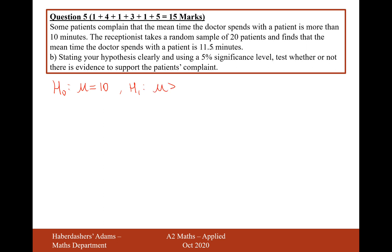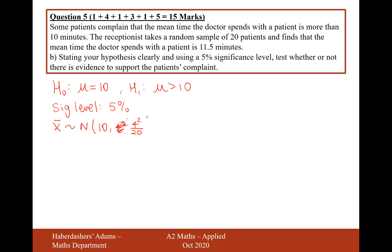We're not saying that the mean is now 11.5; we're saying that the mean is just bigger than 10. The significance level is 5%. We have an X distribution which is normally distributed with a mean of 10 — we're going to assume it's still 10 — with a standard deviation of 4. Now the standard deviation changes because we're working with a sample, which is going to be 4 squared over 20 as the variance because there are 20 patients.